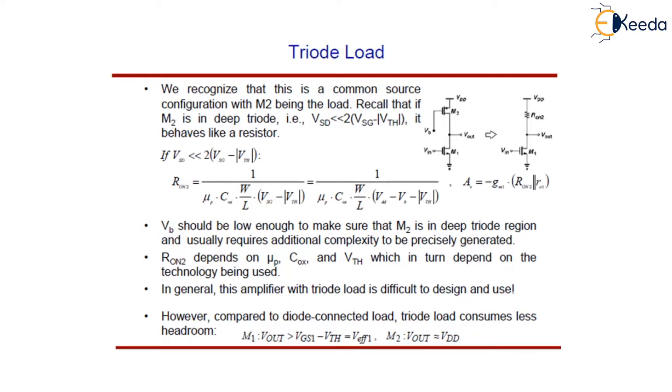And in this case, the voltage gain will become -Gm1 into Ron2 resistance gain from the drain terminal of M2, that is Ron2 in parallel with Rout1. The voltage gain can be readily calculated by using this formula.